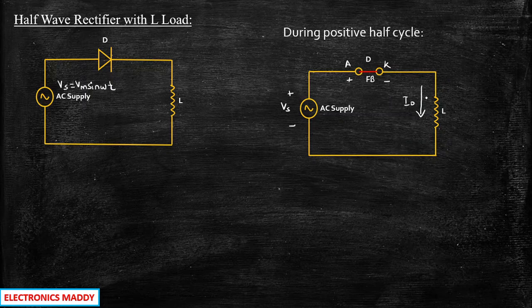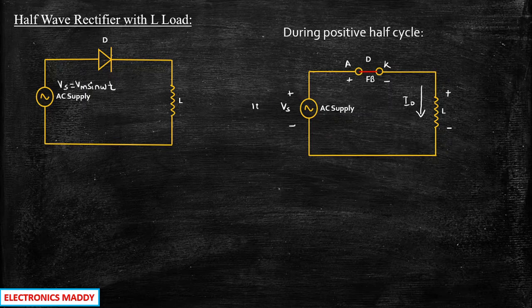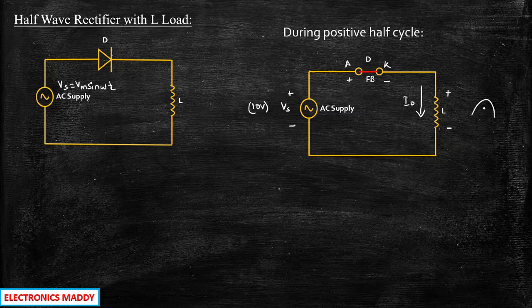When the current starts flowing through the load, according to the property of the inductor, it will charge to the polarity plus and minus. So let us say our supply voltage is equal to 10 volts — just an assumption. The inductor slowly starts charging, and then it gets fully charged at some point in time, and then it starts discharging. During the positive half-cycle, it keeps charging till this point.